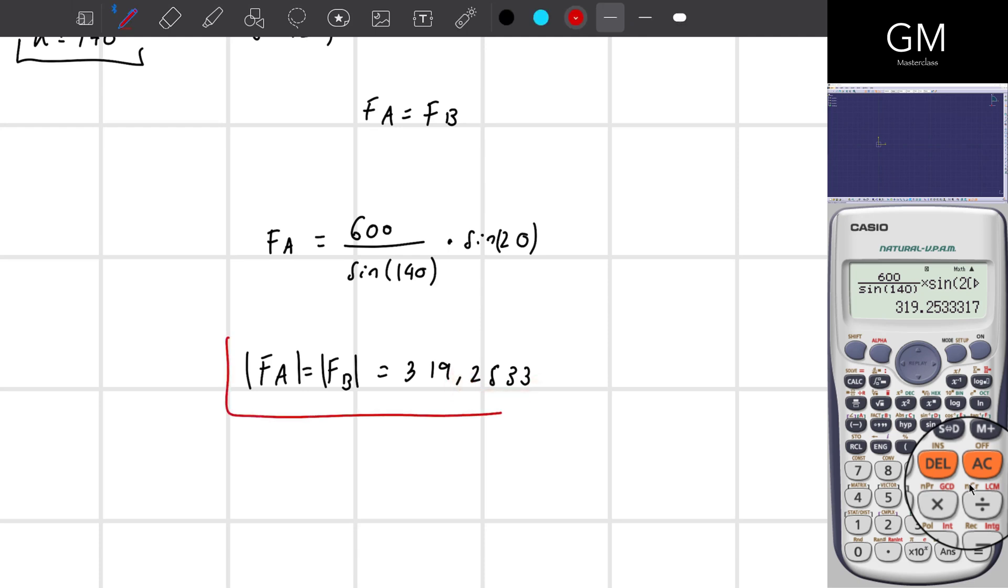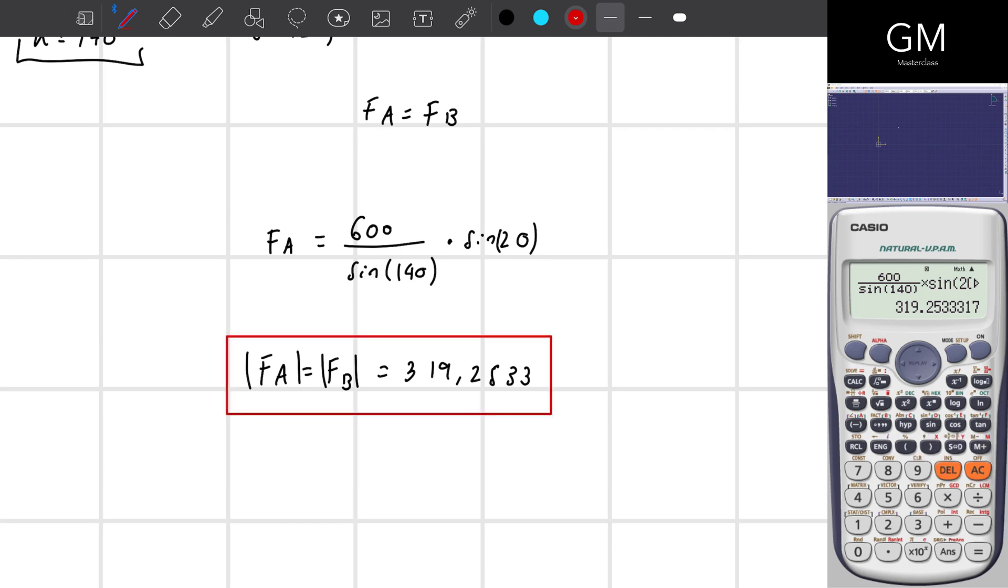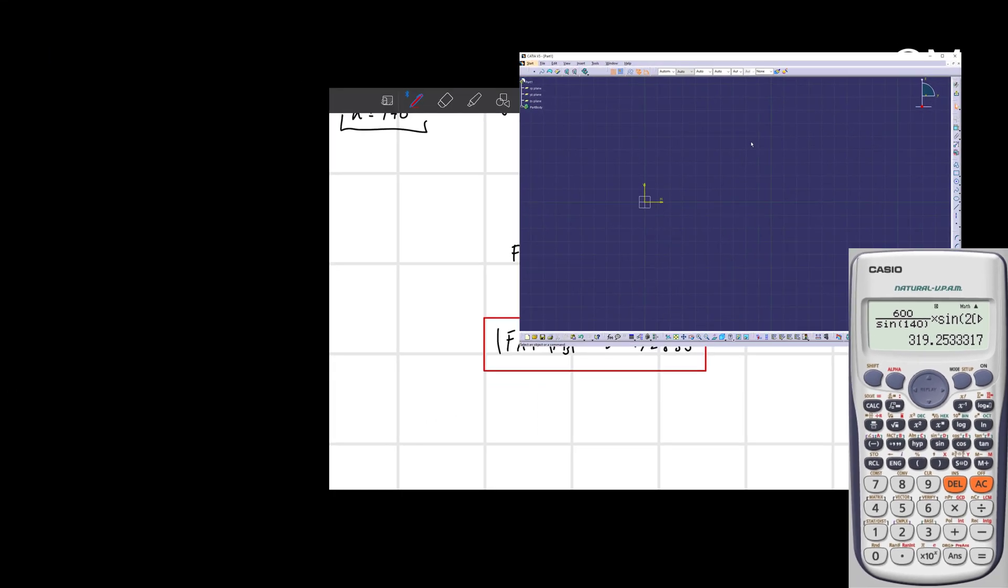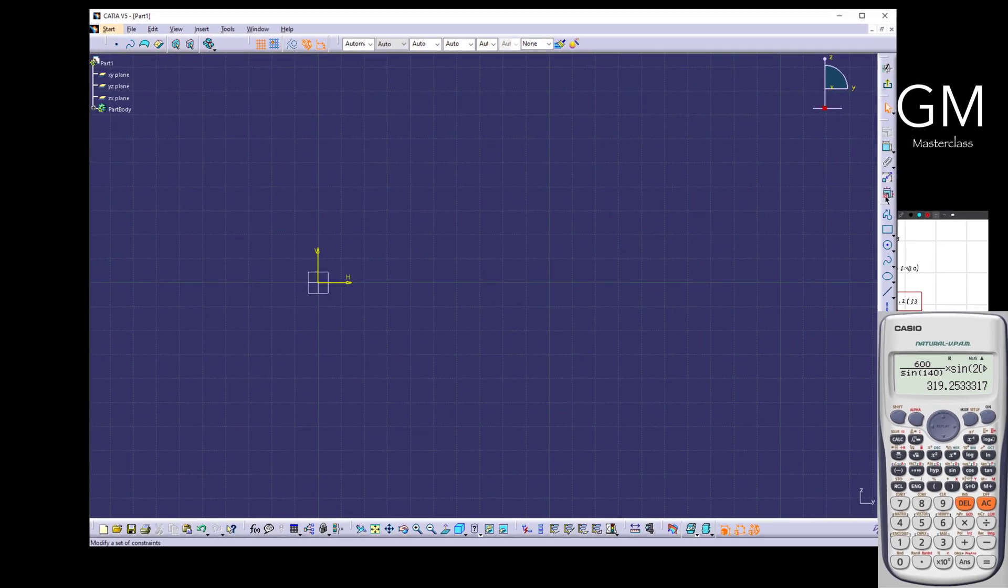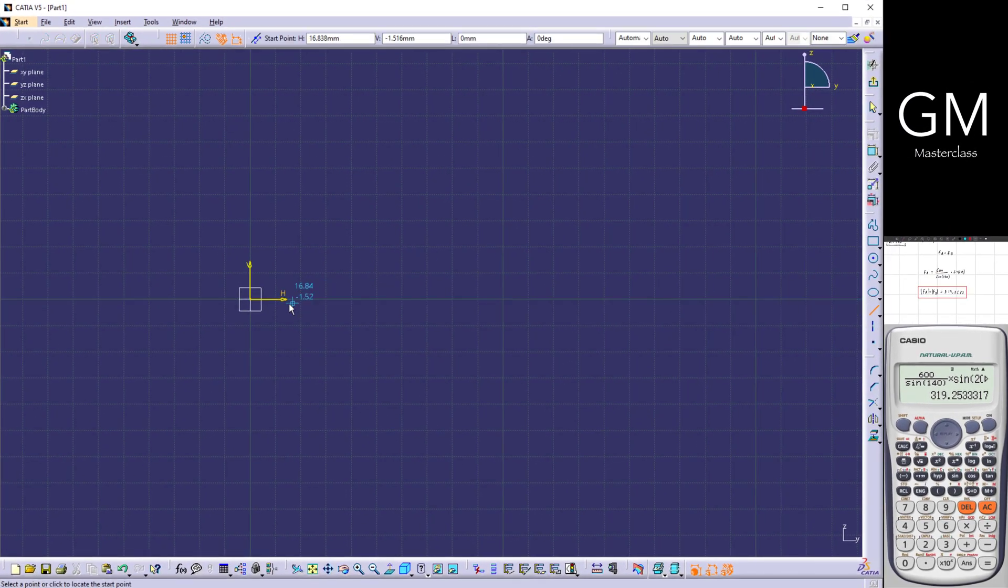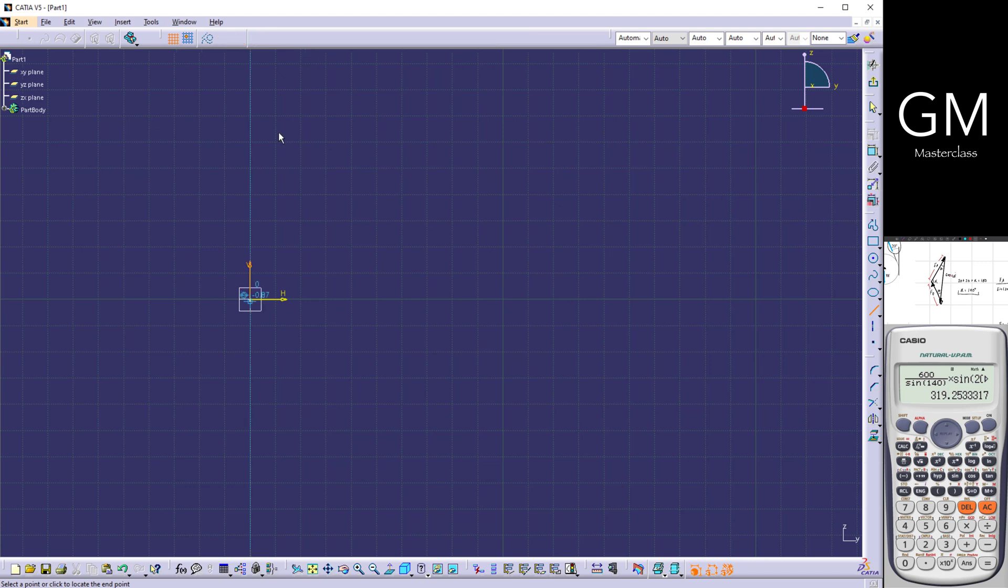There is one way in which I can check that this answer is correct. And this is by using a software. In this case, I'm going to use CATIA V5. Remember that you have within the channel some different tutorials about this tool for you to learn how to use it. What I have to do right here is to create the shape that we just did. So that's actually all.